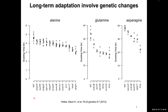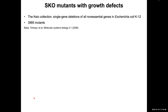It was interesting for us to understand why some deleterious mutations are beneficial for bacteria, and what is the connection between mutations and the nutrients the environment provides. To study this, we decided to use the KO collection — a collection of around 4,000 single gene deletions of non-essential genes in the E. coli K12 strain.